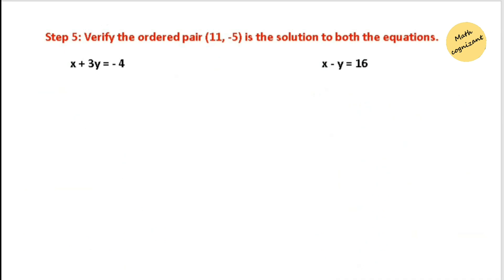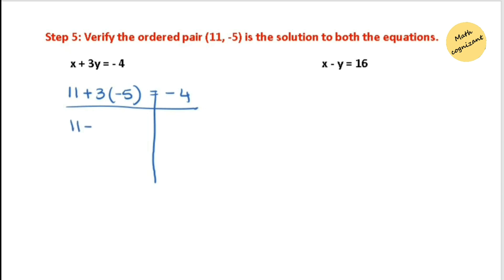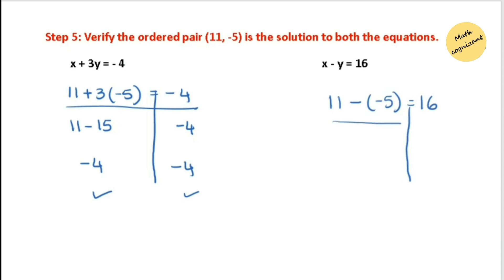The last step is to verify in both equations. For equation 1: 11 plus 3 times negative 5 gives negative 15, so 11 minus 15 equals negative 4, which matches the right-hand side. The solution satisfies equation 1. For equation 2: substituting x equals 11 and y equals negative 5, negative times negative is positive, so 11 plus 5 equals 16, which matches the right side. Both equations are satisfied.